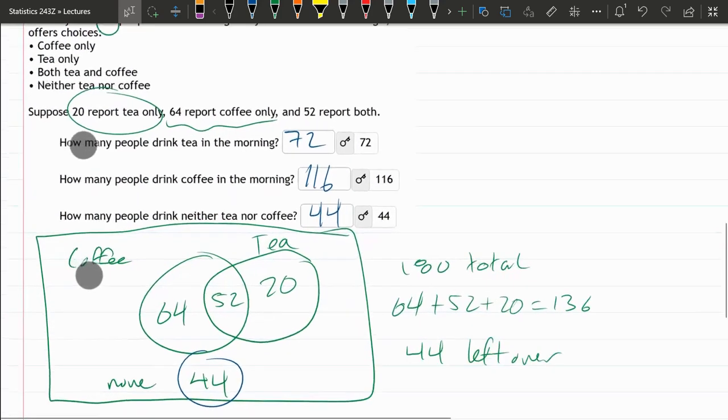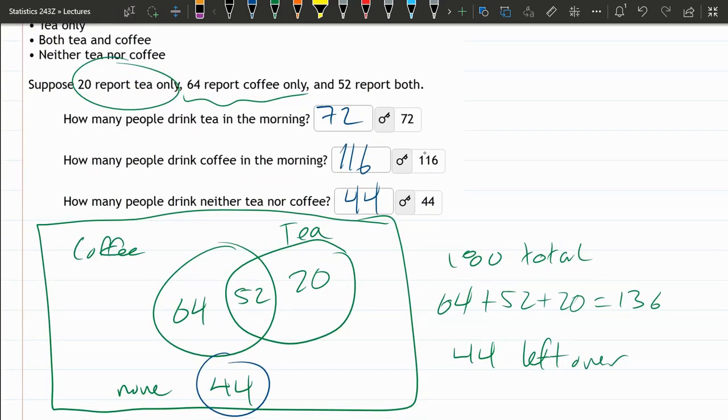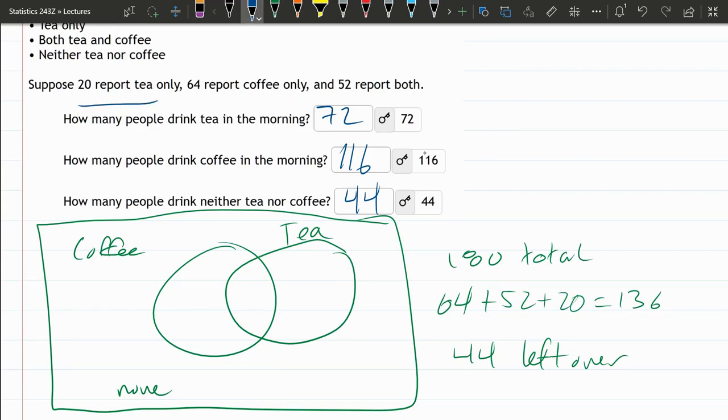Now when we were building this up, I'm going to go back to the beginning. You don't need to erase your chart, your chart's great. If it said 20 reported tea, not tea only—this only is really important. But if that's not there, 20 reported tea, that means 20 are going to be between these two. We would need more information to know how many go in here and how many go in here.